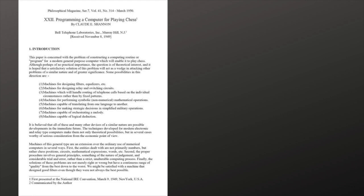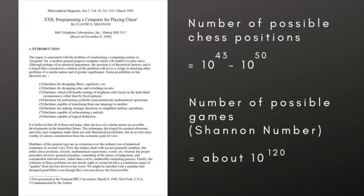In this, he argued that the number of possible positions that any legal number of chess pieces could be in at a given point in a chess match was between 10 to the 43 and 10 to the 50. He also estimated that the number of possible games two players could play without repeating themselves, the so-called Shannon number, was around 10 to the 120.